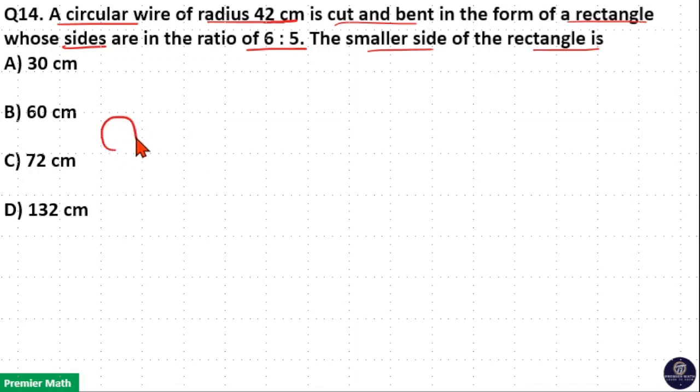Here a circular wire is cut and bent into a rectangle, which means the circumference of the circle, 2πr, is equal to the perimeter of the rectangle, which is 2l plus 2b.